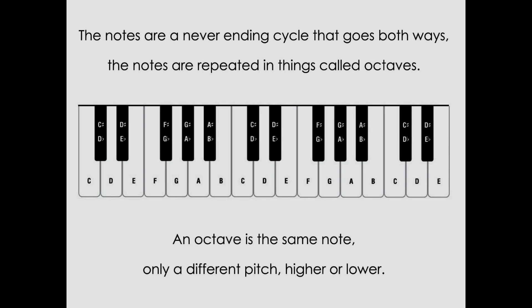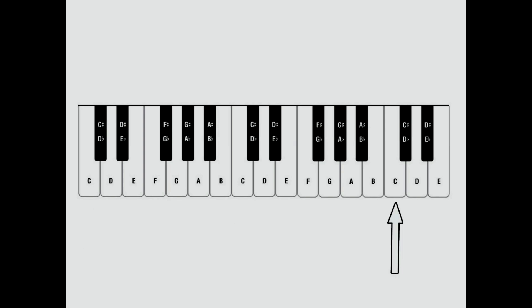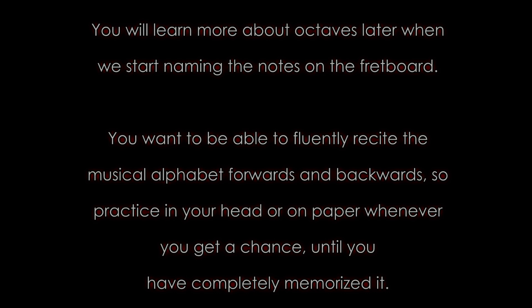The notes are a never-ending cycle that goes both ways. The notes are repeated in things called octaves. An octave is the same note, only a different pitch — higher or lower. So this is a C note, an octave up is another C note, and another octave up is another C note — all the same notes, just higher or lower. You will learn more about octaves when we start naming the notes on the fretboard.